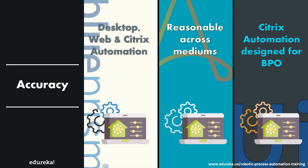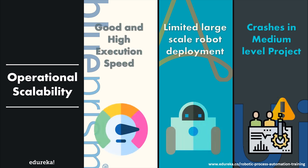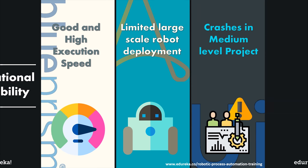Moving on to operational scalability: Blue Prism clearly wins here, offering good and high execution speed. Automation Anywhere offers limited large-scale deployment, and UI Path tends to crash in medium-level projects. So in the hierarchy for operational scalability, Blue Prism emerges as the winner, followed by Automation Anywhere and then UI Path.